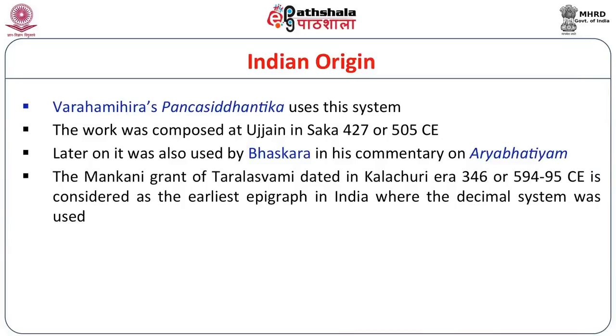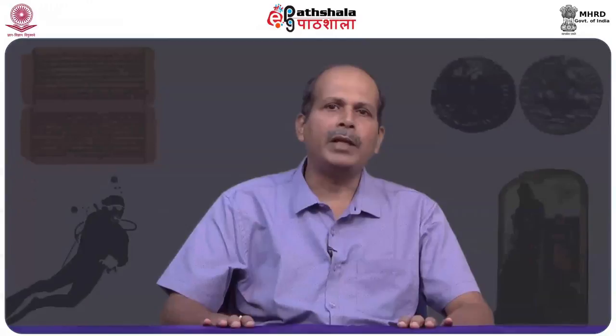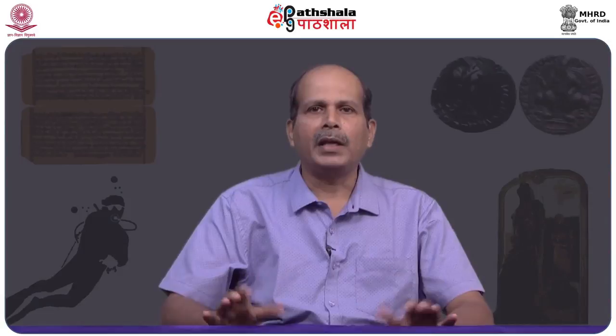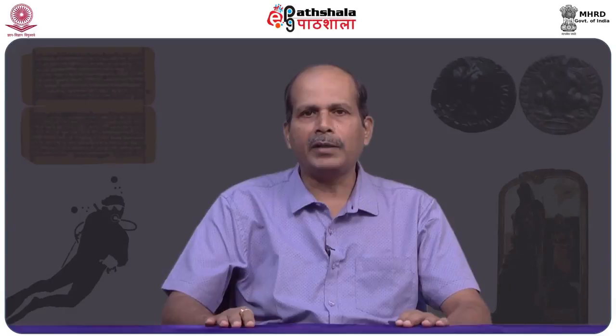So far as inscriptions are concerned, the Mankani grant of Taralaswami is dated in Kalachuri era 346, equivalent to 594-95 CE. This inscription is considered the earliest epigraph in India where the decimal system of notation was used. However, it is a controversial inscription — some scholars consider it spurious while others treat it as genuine. The use of decimal place value notation by Varahamihira and Bhaskara in their astronomical works coincides with the date of the Mankani inscription, lending support to its authenticity.